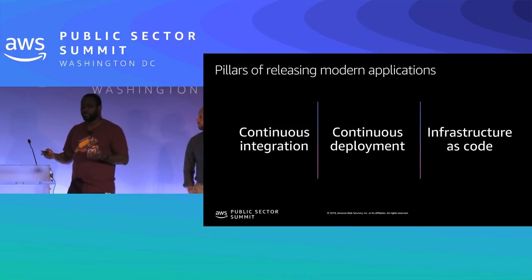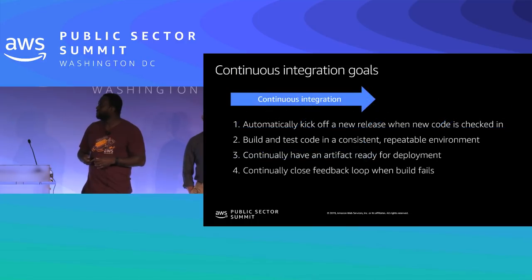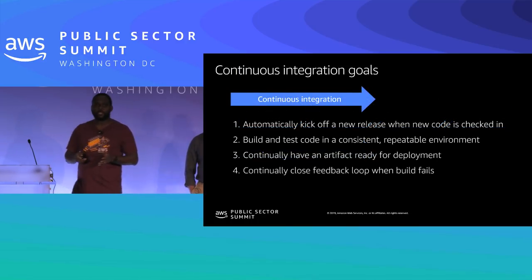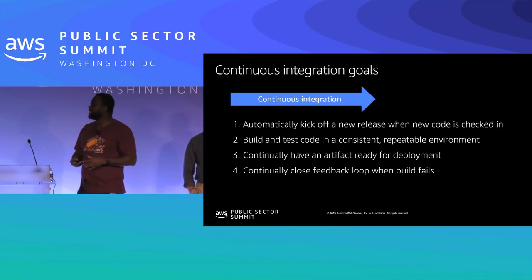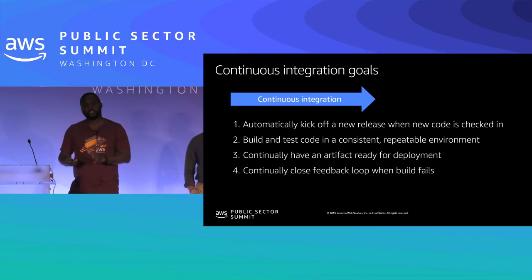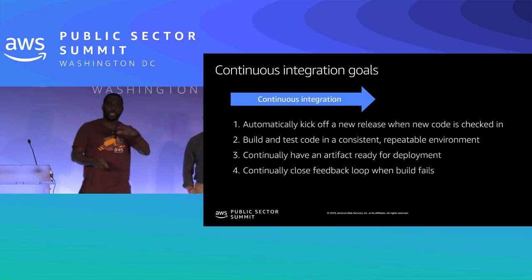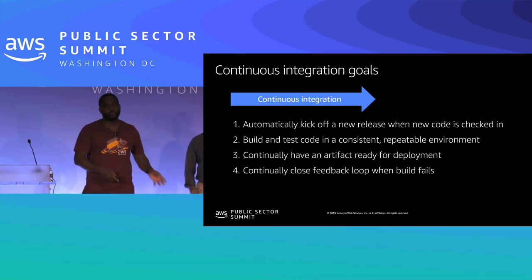Looking at the pillars of modern applications: continuous integration, continuous deployment, and infrastructure as code. The goals of continuous integration are to have a build process kick off whenever a check-in occurs, to build and test in a consistent and repeatable environment, and to always have an artifact ready for deployment. If no artifact is ready, something's broken and you need to go back and fix it. You also want a feedback loop to inform whether something needs to change.